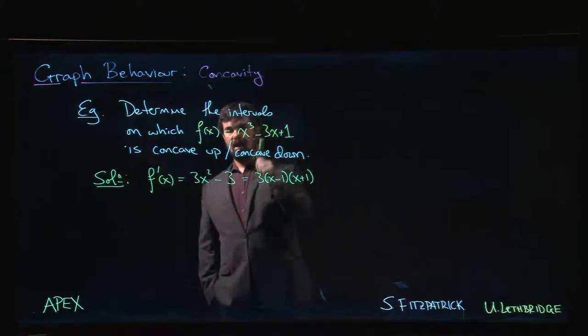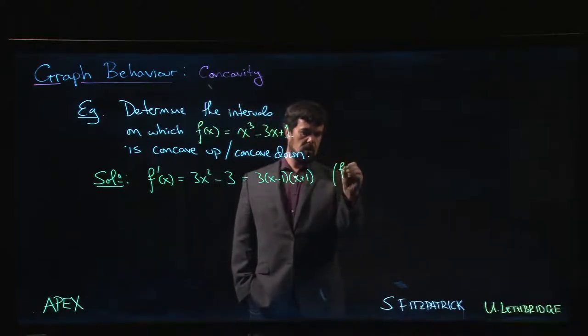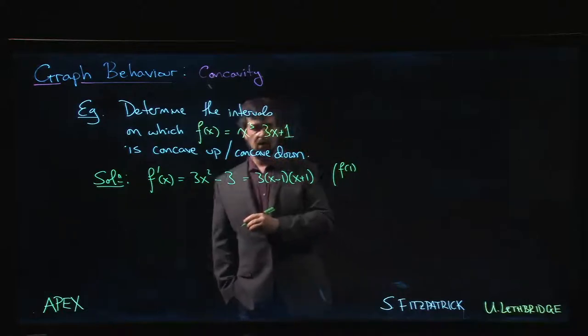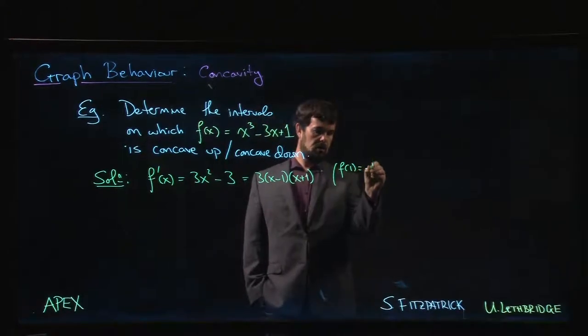We could plug those critical numbers back into the original function if we were so inclined and get the corresponding critical points. f(1) is going to be 1 - 3 + 1 = -1.